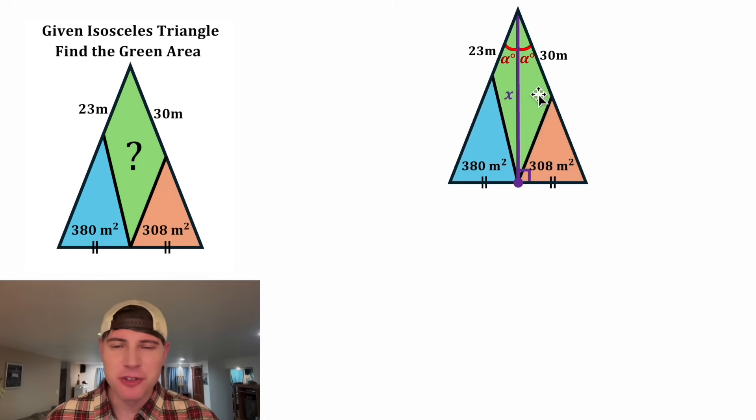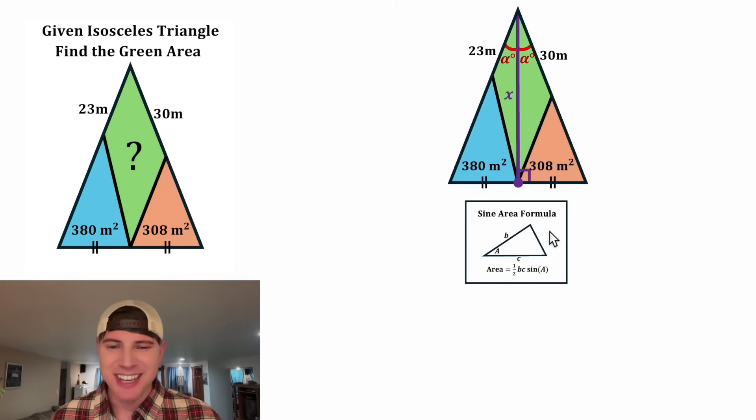We're trying to solve for this green area and now we've split it up into two triangles. So if we can find the areas of these triangles, we can solve this thing. Unfortunately, they're not right triangles and it's going to be tricky to find the height, but we can use this formula. According to this sine area formula, the area of any triangle is one half times one side times another side times the sine of the angle in between them. And this will work on any triangle, even if it isn't a right triangle.